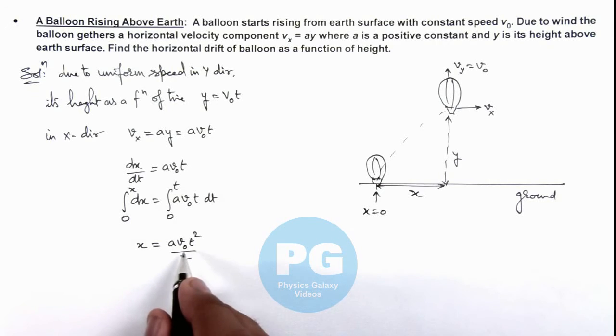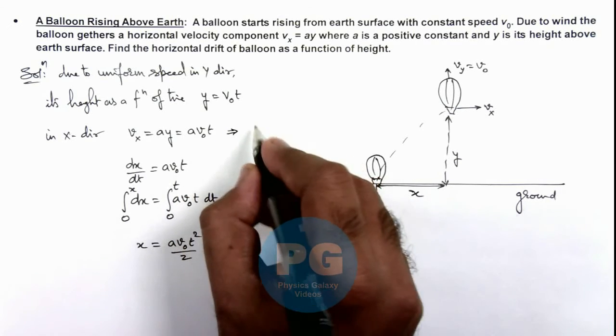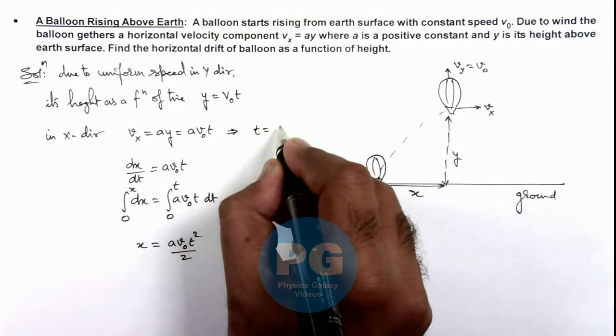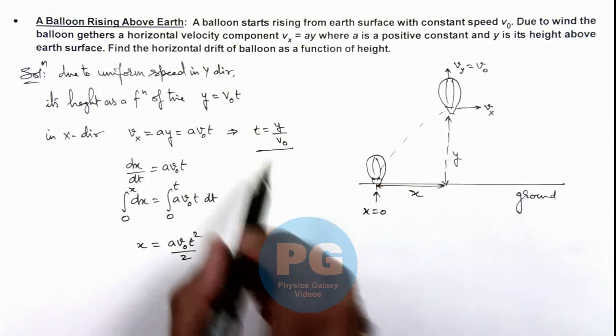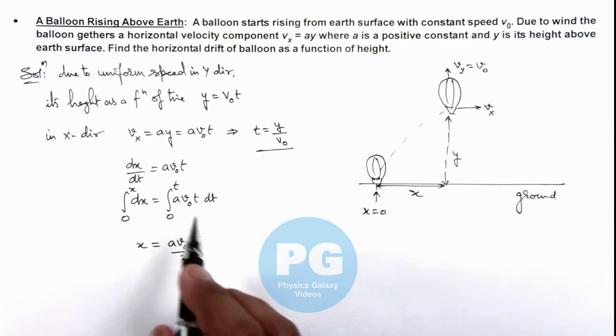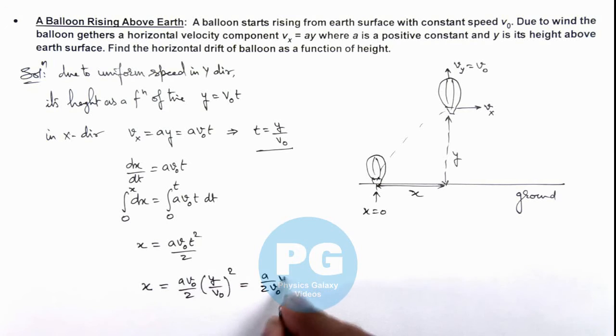So in this situation, here we can substitute the value of time in terms of height. The value of t we can write as y upon v not. So if we see the value of time, the horizontal drift here we can write as ay*v not by 2 multiplied by (y by v not) whole square. This is equal to ay by 2*v not multiplied by y square.